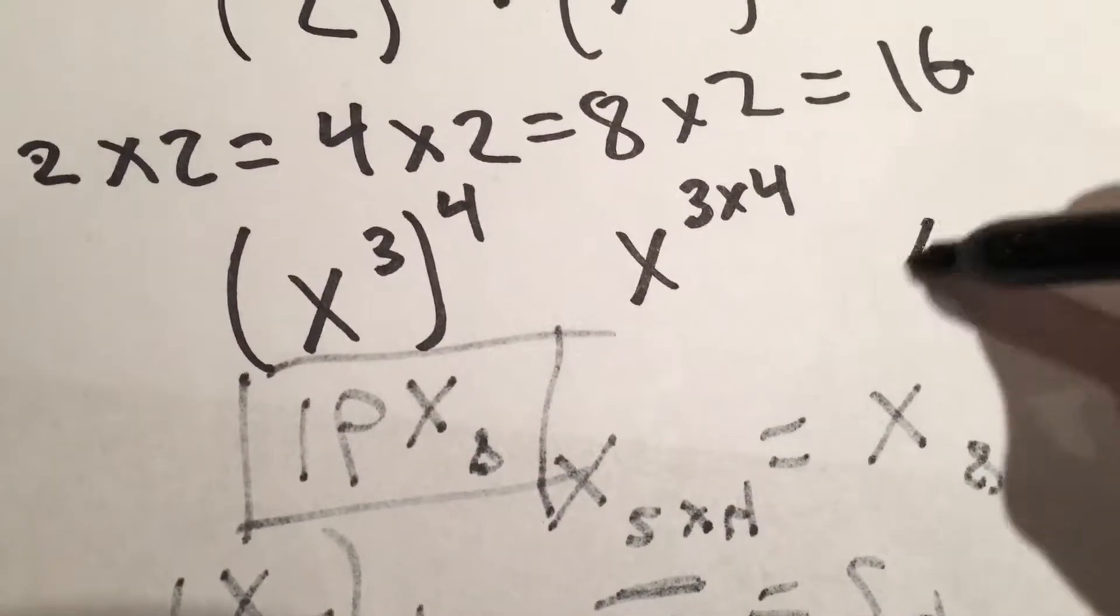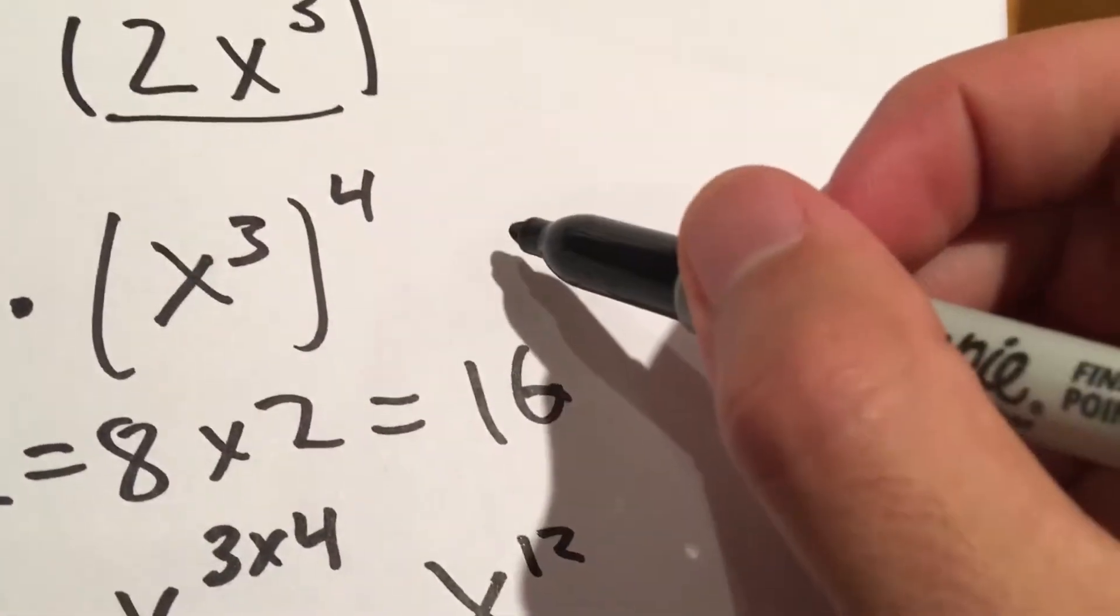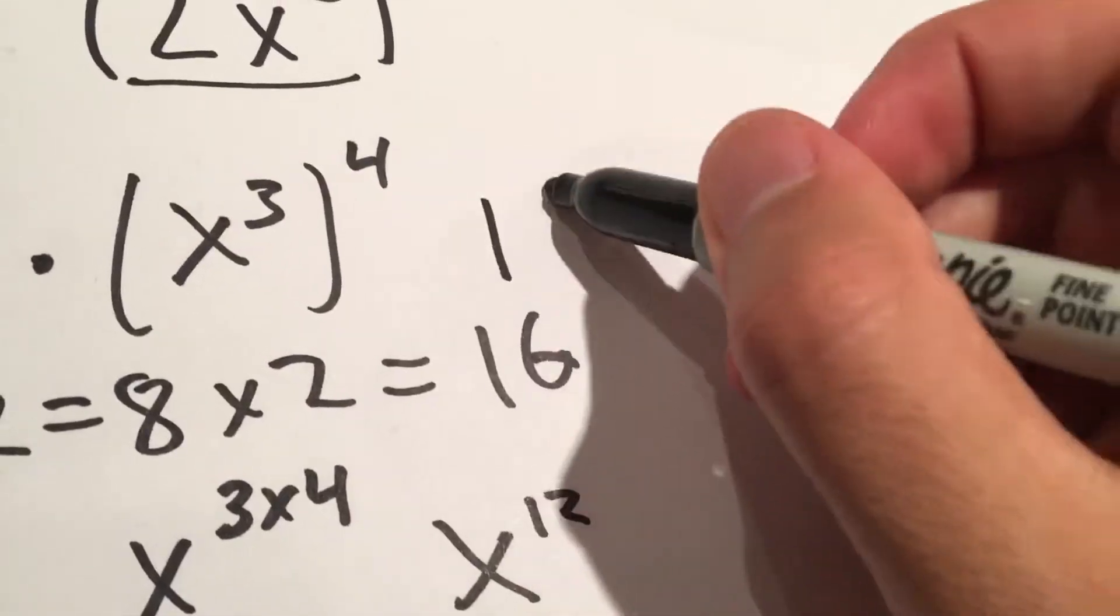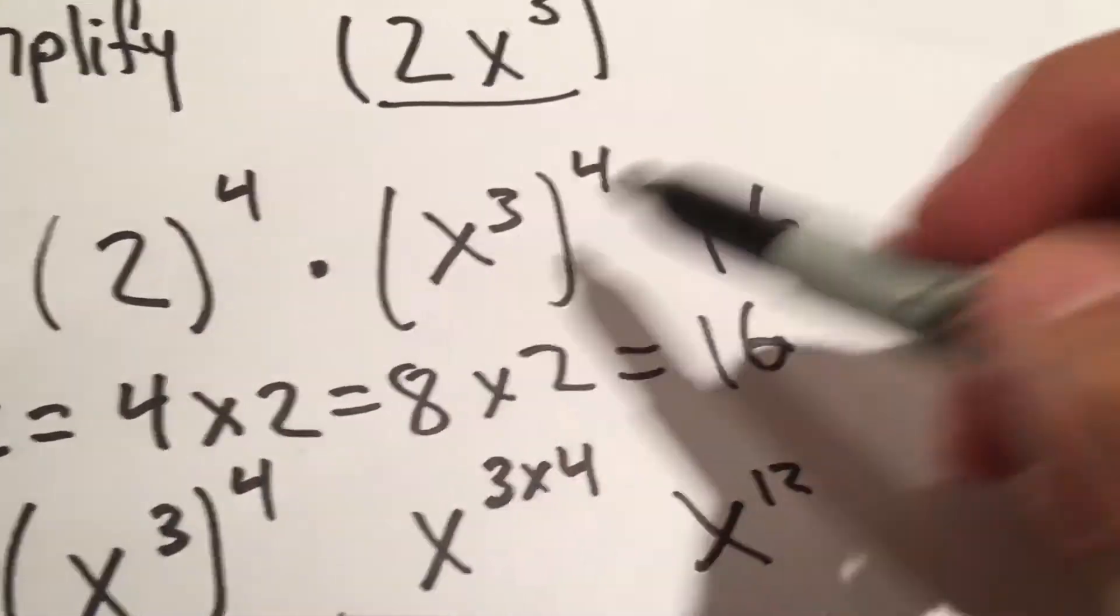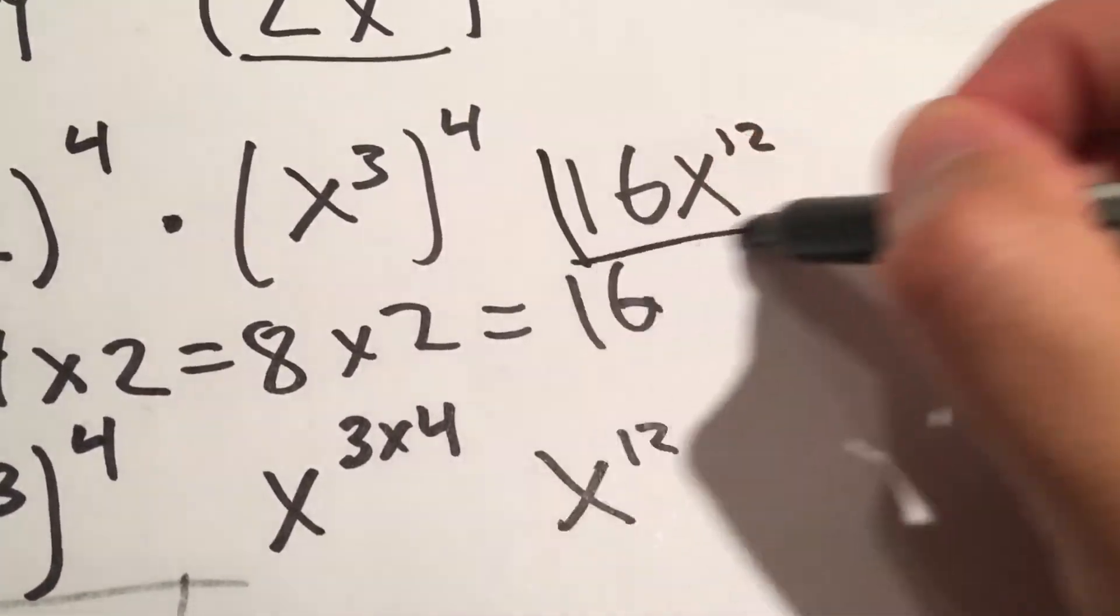And we know that 3 times 4 is 12, so this just becomes x to the 12th. So our final answer becomes 16 times x to the 12th. That is our final answer.